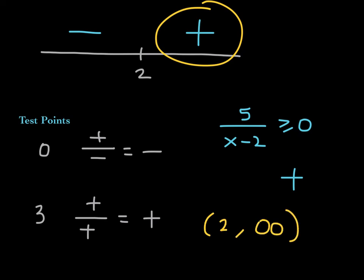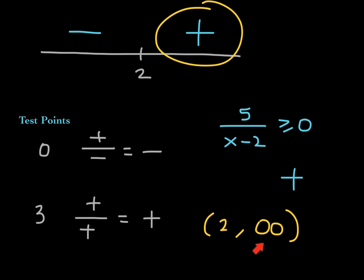This is the last example and this is the answer. The big takeaway here is that when you're solving a rational inequality, all you need are the x-intercepts and the vertical asymptotes. Then you choose test points from each interval and follow the sign. This completes this lesson and it also completes Chapter 3.